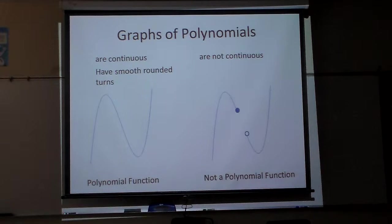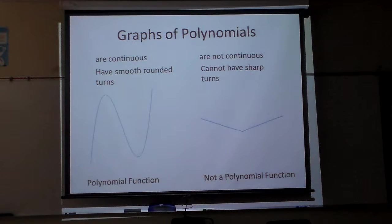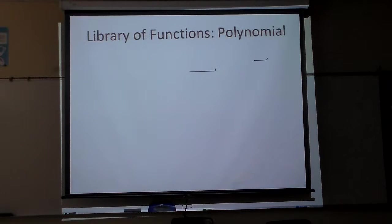They have smooth rounded turns, looks like that. They are not like this kind right there. They cannot have sharp turns. That's more like an absolute value particular thing. So the polynomial function will look something like that. There's some curves in it, usually. No, it would have to have some curves.